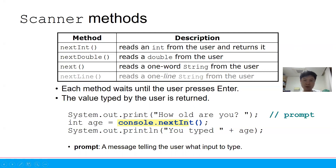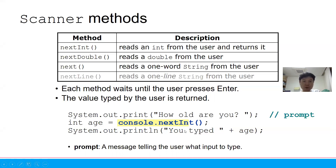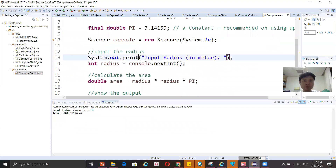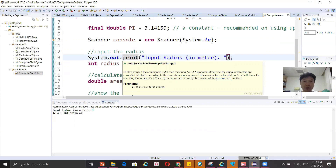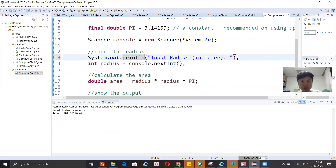Whenever you have an input, I recommend you add a prompt. A prompt is something you print before asking for input — a message telling the user what to type. For example, 'How old are you?' is printed before the user inserts a value. The value is then stored in the variable. Note that print and println are different: println moves to the next line after printing, while print stays on the same line, which is appropriate before an input field.